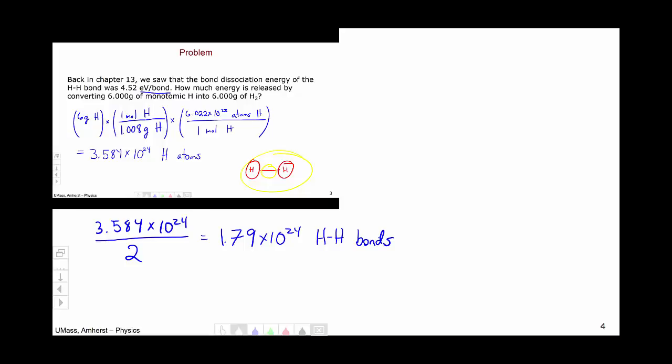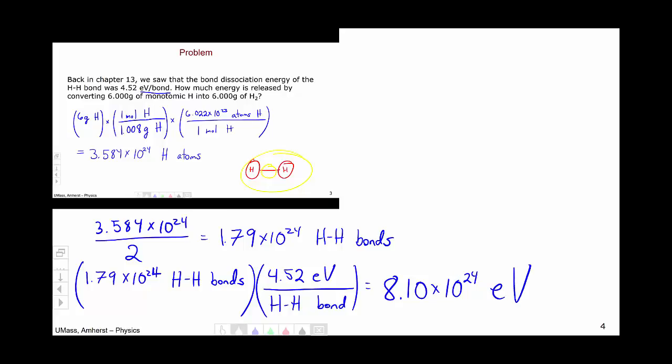In the problem, we know that it's 4.52 electron volts per bond. So, how many electron volts is that in total? We have 1.79 times 10 to the 24th hydrogen-hydrogen bonds. And we know that we get 4.52 electron volts out for each hydrogen-hydrogen bond, which leaves us with 8.10 times 10 to the 24th electron volts.